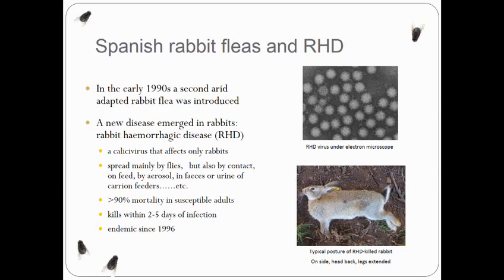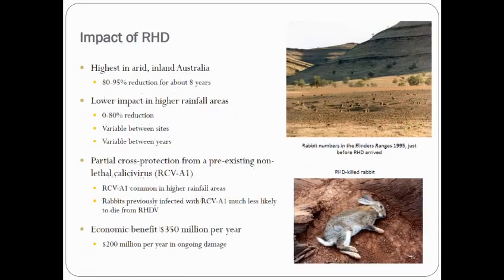RHD was introduced into Australia, and within 12 months of its accidental escape from Wardang Island it had reached most rabbit populations in Australia. There have been naturally recurring outbreaks of the disease in almost every rabbit population in Australia since that time.